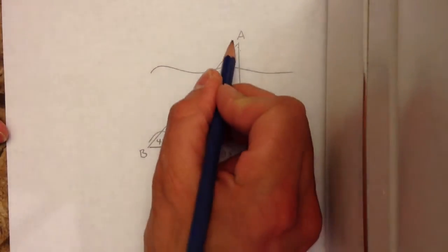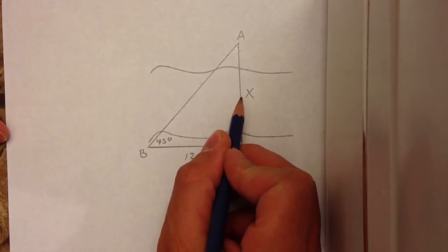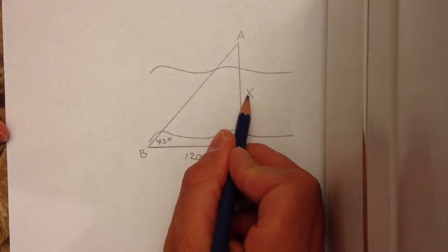What you're trying to do in this question is you're trying to find the distance across the river. So it's this side that you want to find. So we'll make this x.